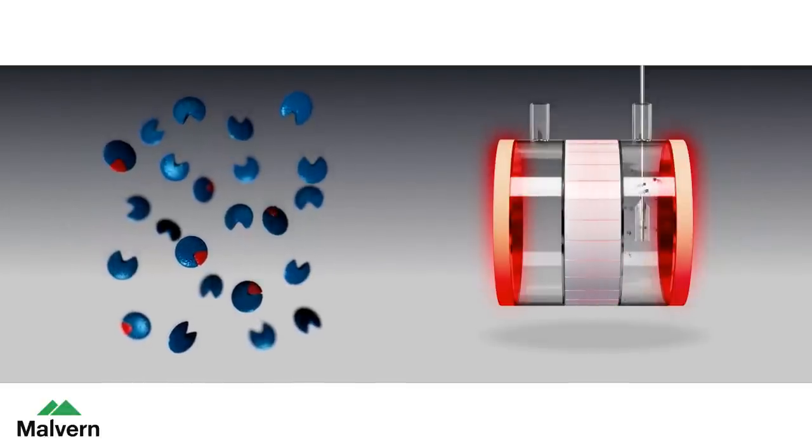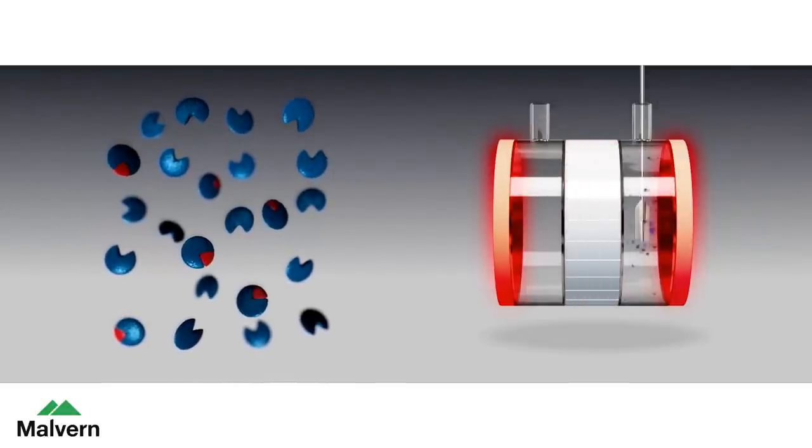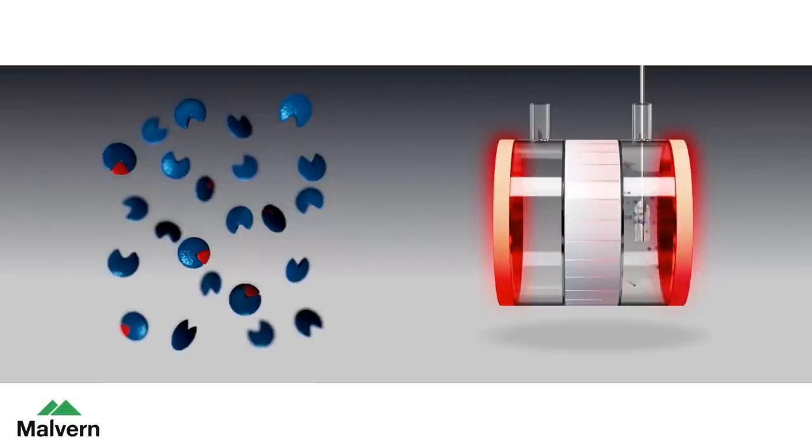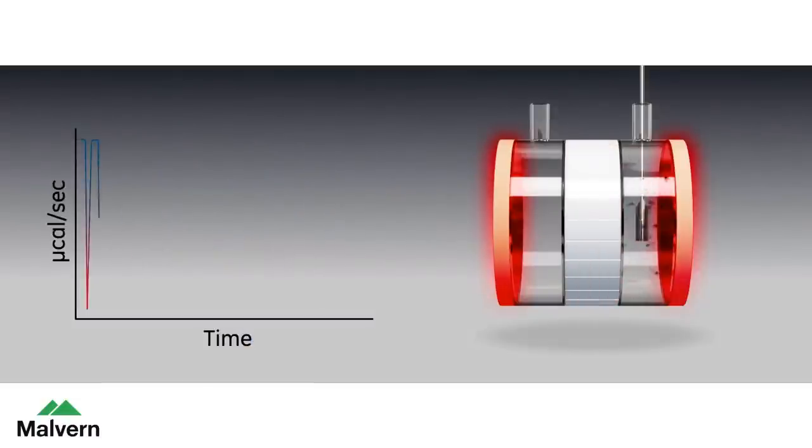A second small aliquot of ligand is injected into the sample cell and the microcalorimeter compensates once again for the small heat change detected.